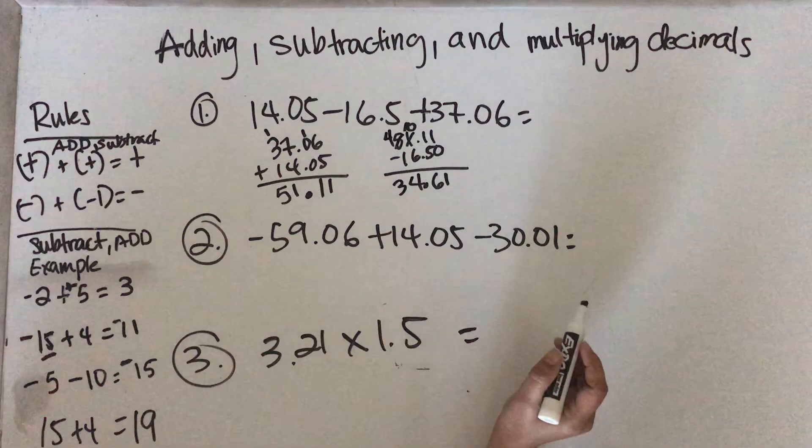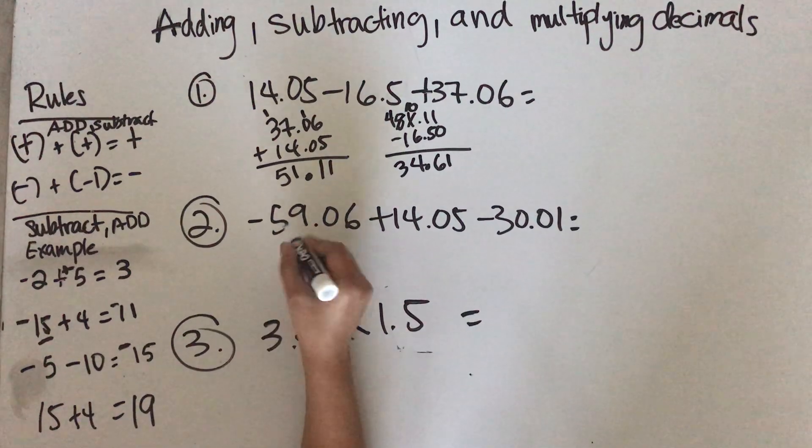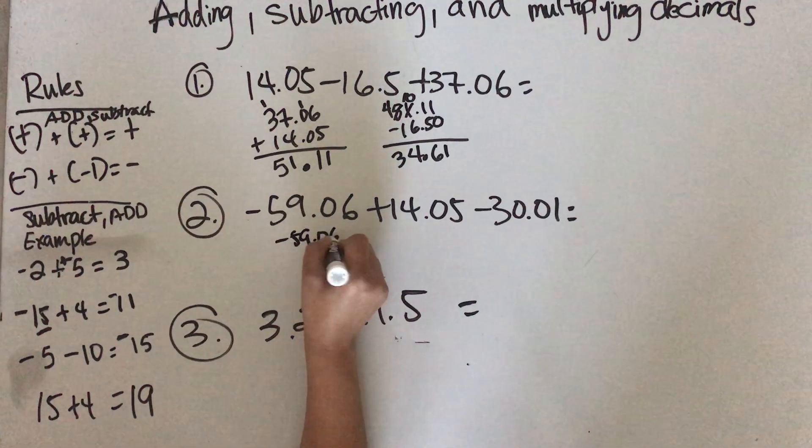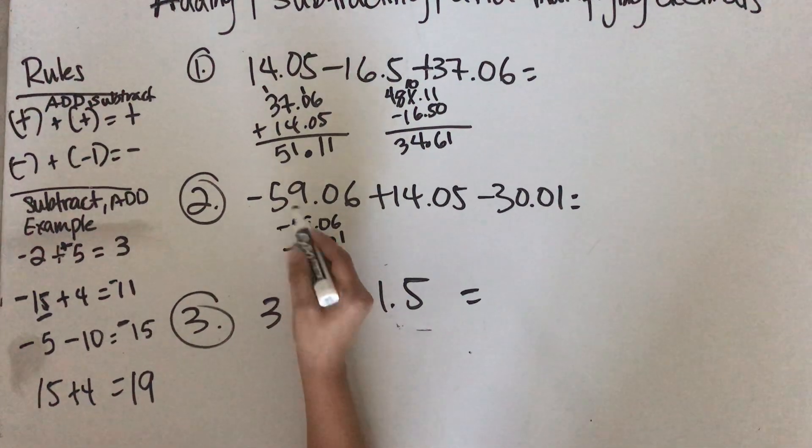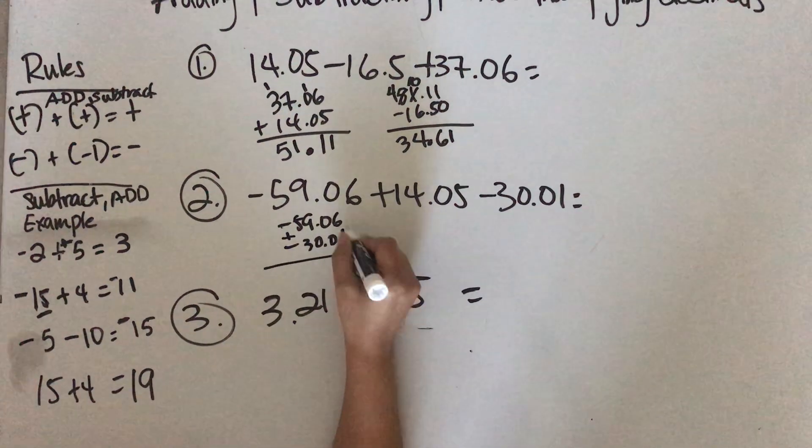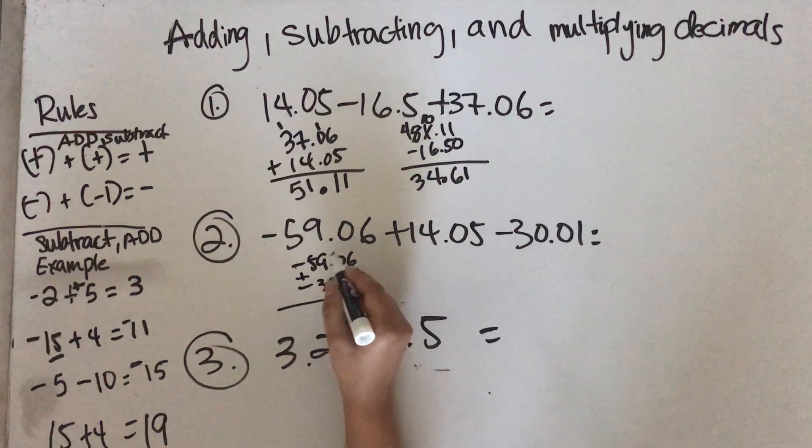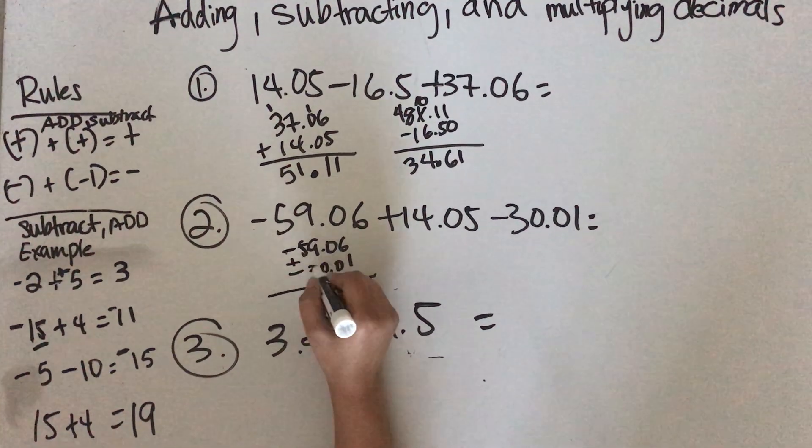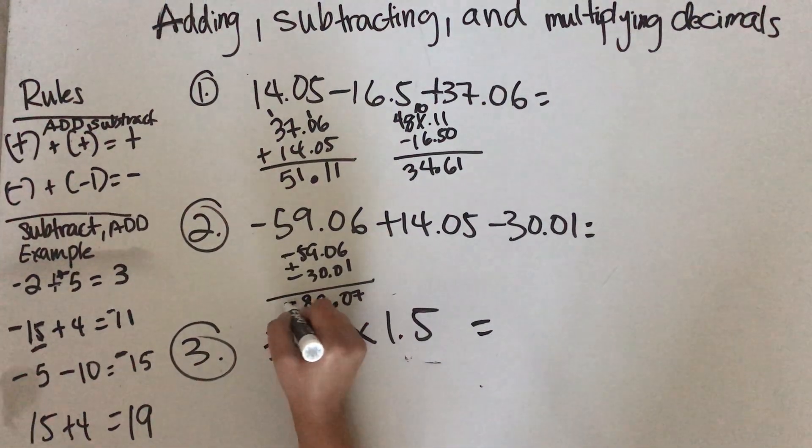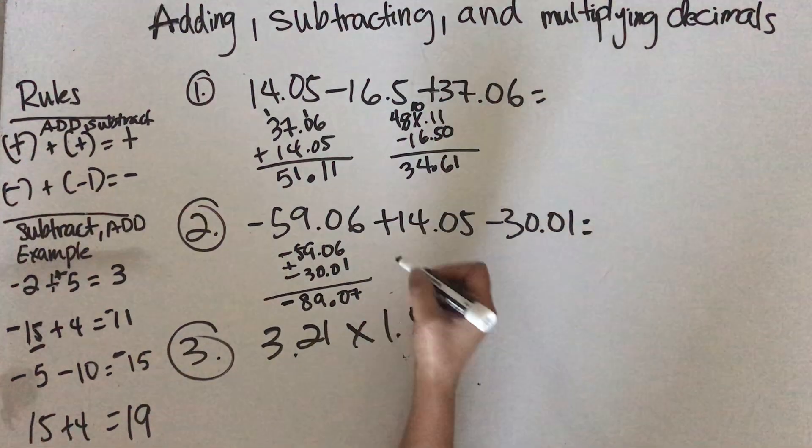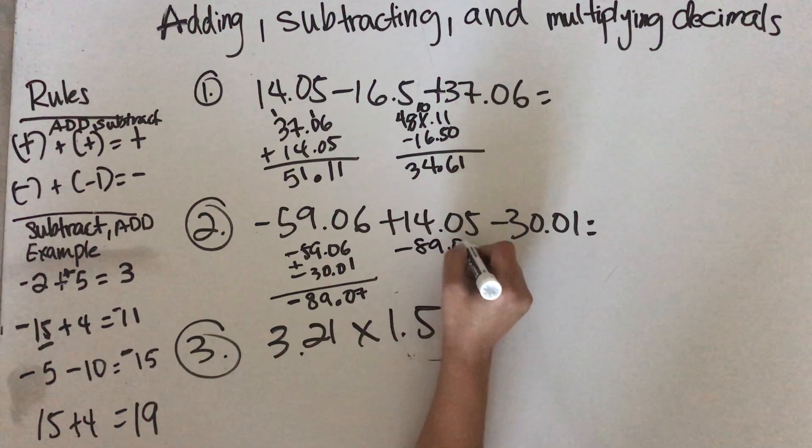Let's do another one. Take like terms: negative 59.06 and negative 30.01. Remember, when you have negative and negative, you're actually adding them. 6 plus 1 is 7, 0 plus 0 is 0, align your decimal points, 9 plus 0 is 9, 5 plus 3 is 8. Since they're both negative, you put that negative sign: negative 89.07.